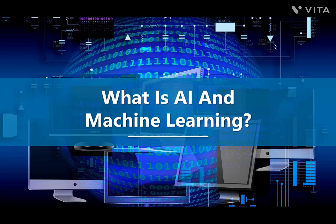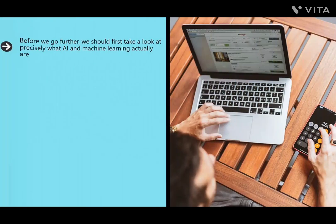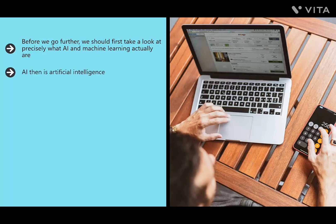What is AI and machine learning? Before we go further, we should first take a look at precisely what AI and machine learning actually are. These are two related but also distinct terms which often get confused. Both will impact on marketing, but in different and unique ways. AI — artificial intelligence — means software and hardware designed to act and appear intelligent.